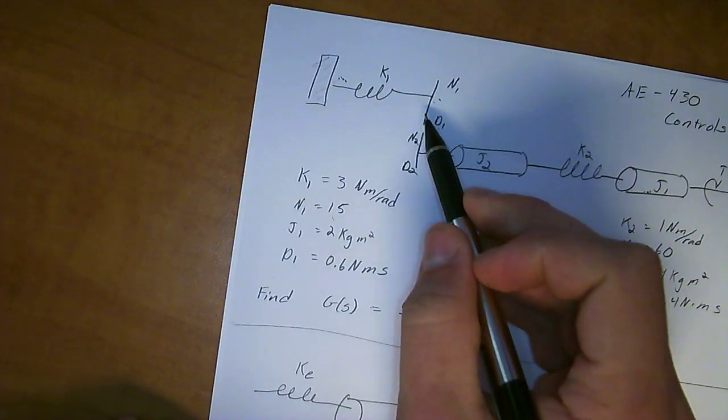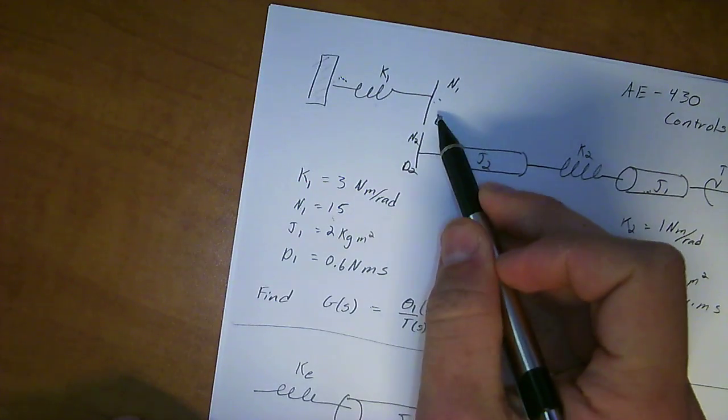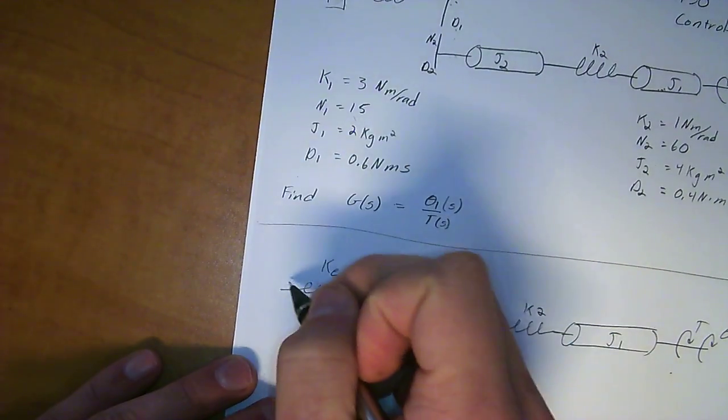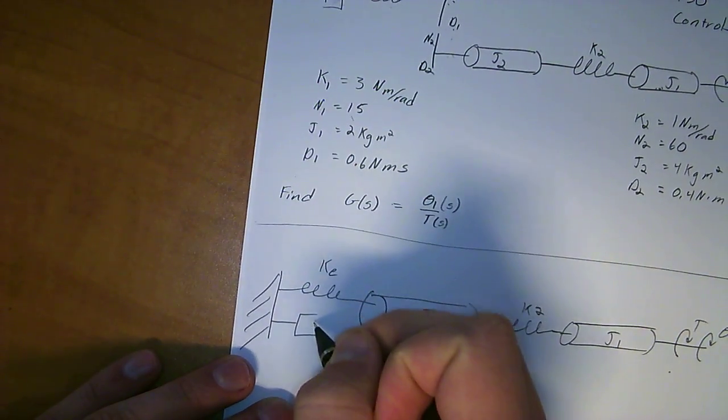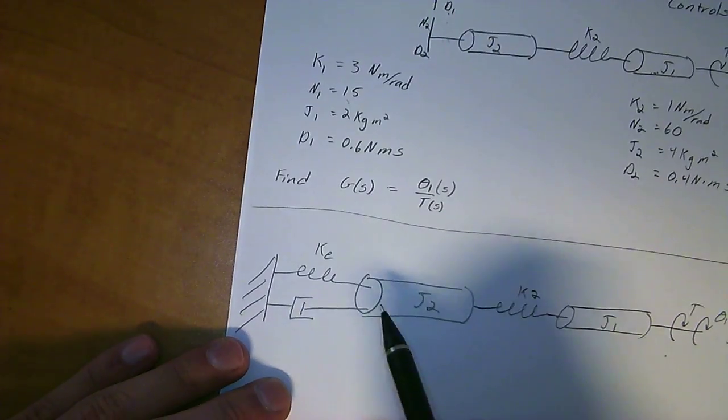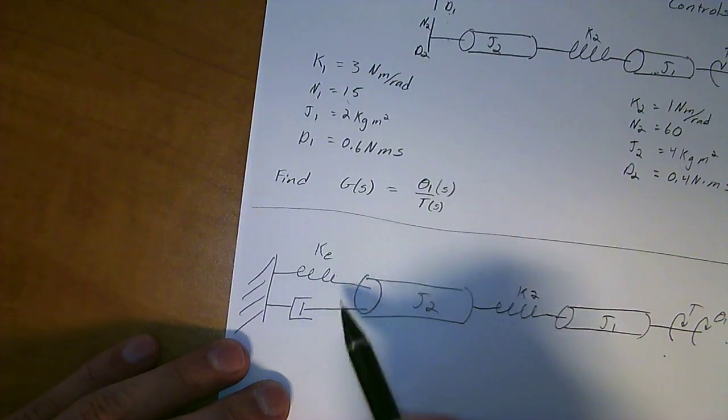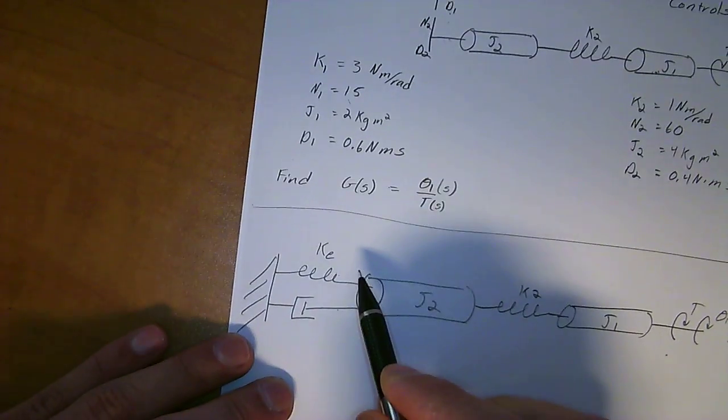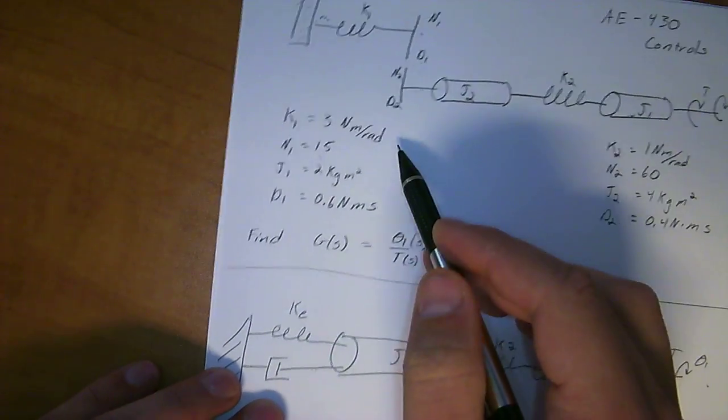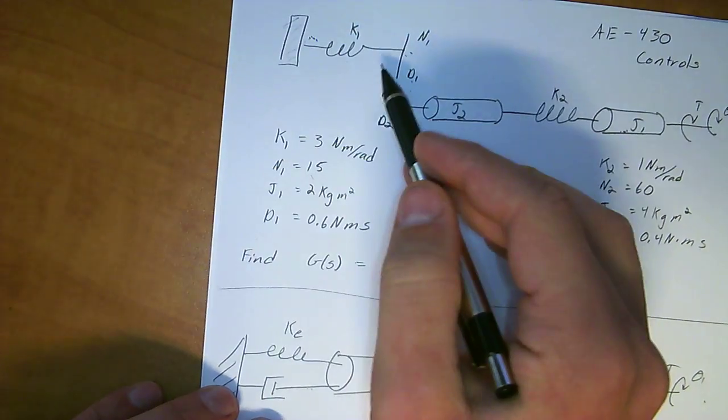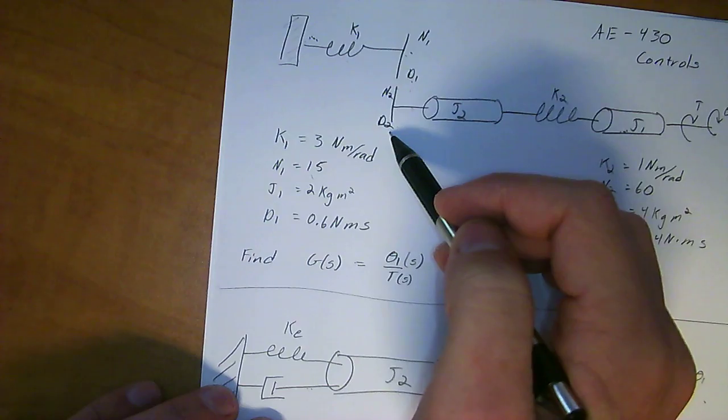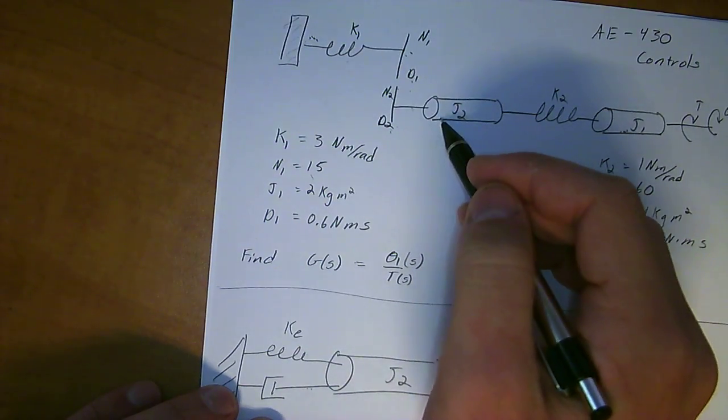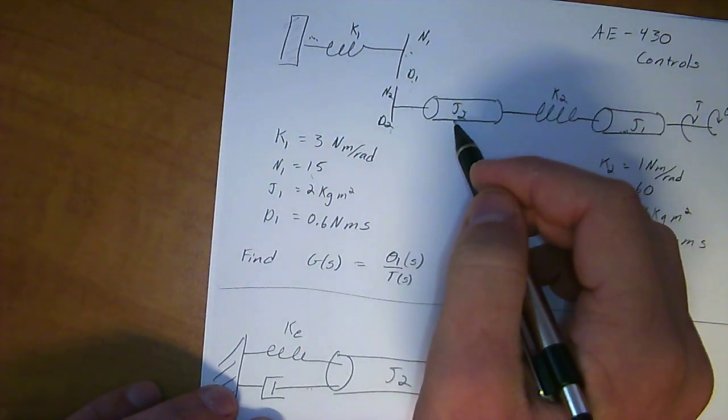But then we also have a damping caused by the gears. Now, this is the part where a lot of people screw up on this problem. So if you're watching, you actually have to put that damping ratio in parallel with the spring. A lot of people get confused by this because they think the damping is right here. Why isn't it in series?